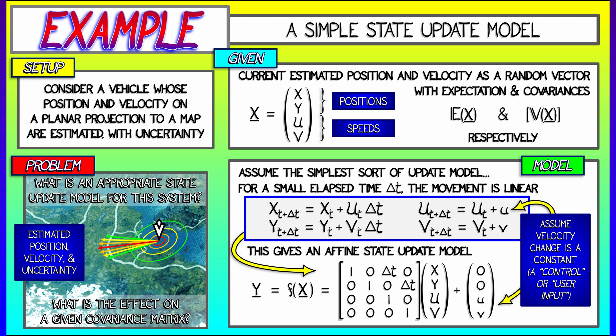We have this linear transformation. And then we have this additional change to the velocity components. Let's call that a control or a user input. So I can modify my speed. Think of an aircraft moving through the sky where you're slowly changing its bearing.